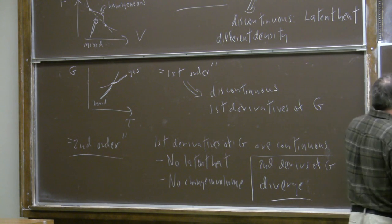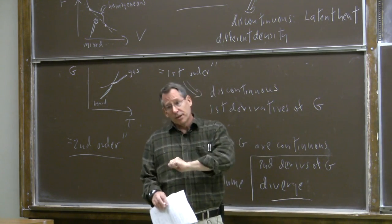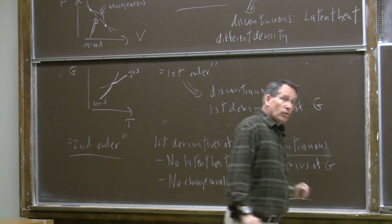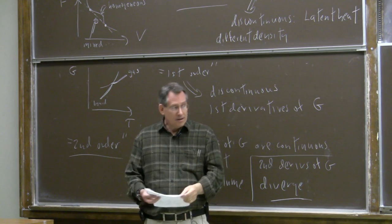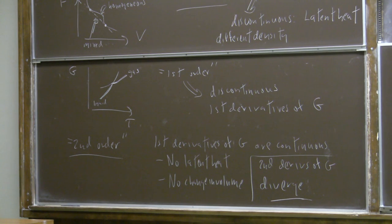Similarly, the compressibility—defined as one over V times the derivative of volume with respect to pressure at constant temperature—is positive in the stable phase. It can be viewed as a second derivative of Gibbs free energy: minus one over volume times the second derivative of G with respect to volume at fixed temperature. That too blows up like the deviation from critical temperature to some power—not necessarily the same power.